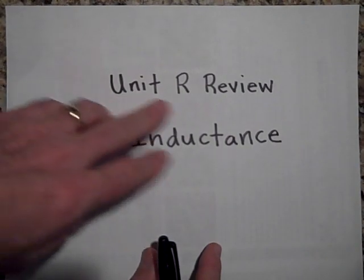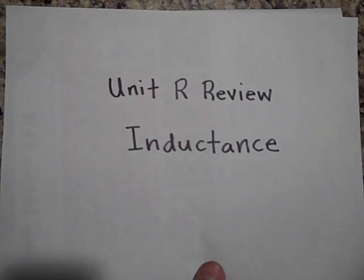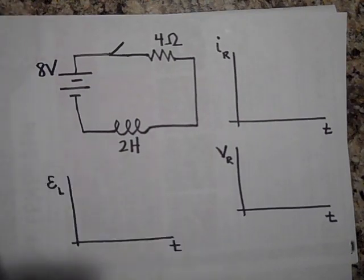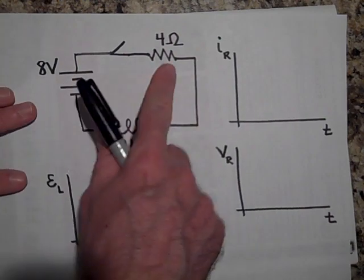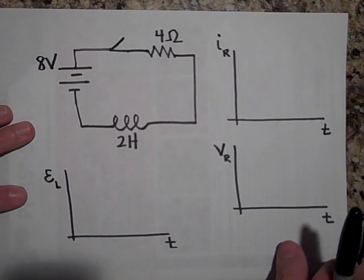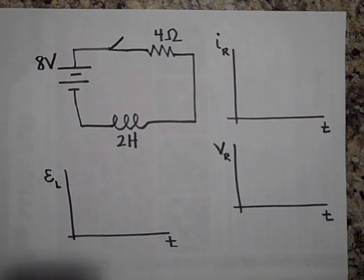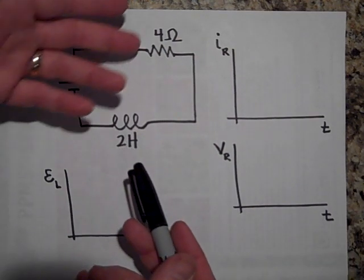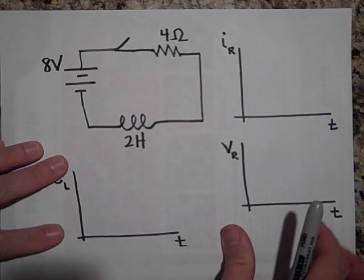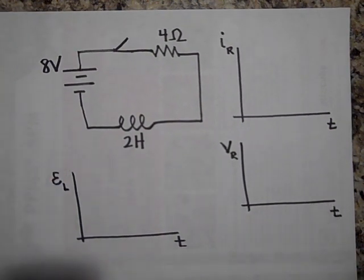Here begins a unit review of inductance, so it should be fairly quick. We have an 8-volt battery, a 4-ohm resistor, and a 2-Henry inductor. These quantities are made large to keep the numbers manageable — a 2-Henry inductor is a huge inductance, but it's just to make the numbers work out so they don't get in our way.